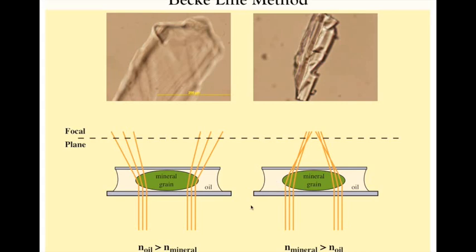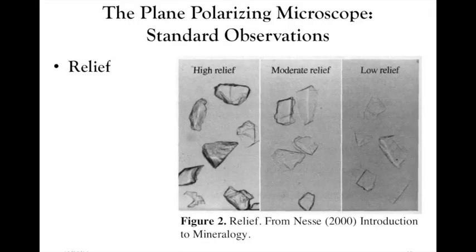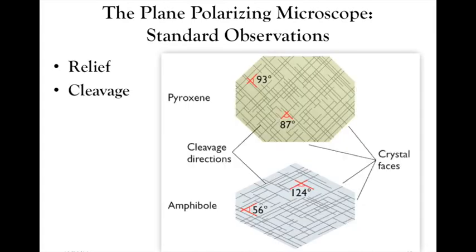By going high and low with the oil refractive index and observing which way the Becky line moves, we can figure out where our unknown crystal's refractive index falls. The plane polarizing microscope also allows other standard observations: relief, which we've already discussed; cleavage planes, where we can measure cleavage angles — for example, pyroxenes have cleavage planes around 90 degrees and amphiboles at much different angles, helping distinguish related minerals; and color.